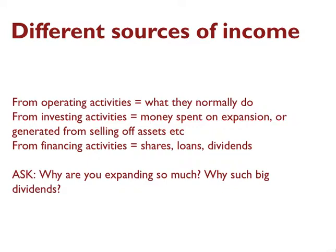One other thing to consider is that the different sources of income declared on a cash flow statement can vary in terms of where money is coming from. The main income is from operating activities — basically the main business. In the case of a builder, their operating activities are building and selling homes. But they might also have income from investing activities — money spent on expansion or selling off things they own — and they might have financing activities as well, like selling shares to raise money or issuing dividends. Some questions to ask about those sources of income might be why a company is expanding a lot or why it's paying out large dividends.